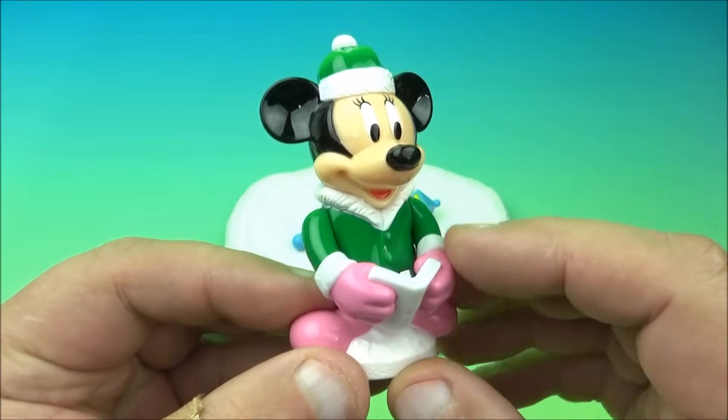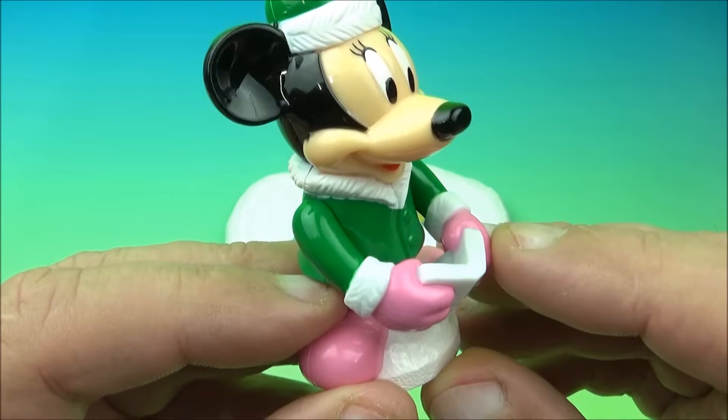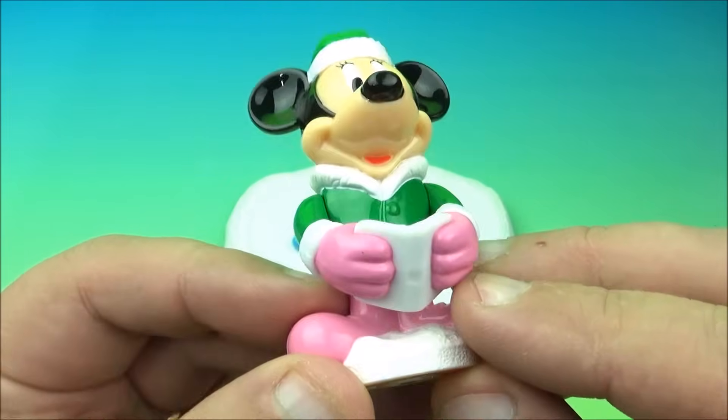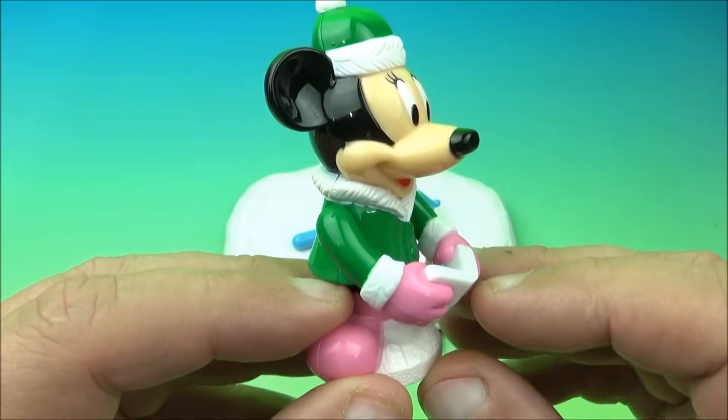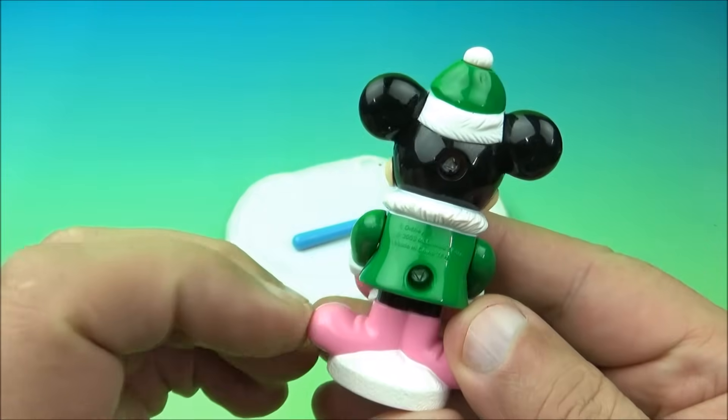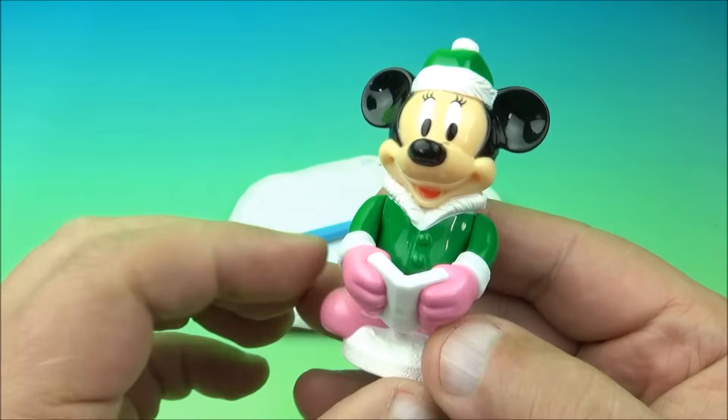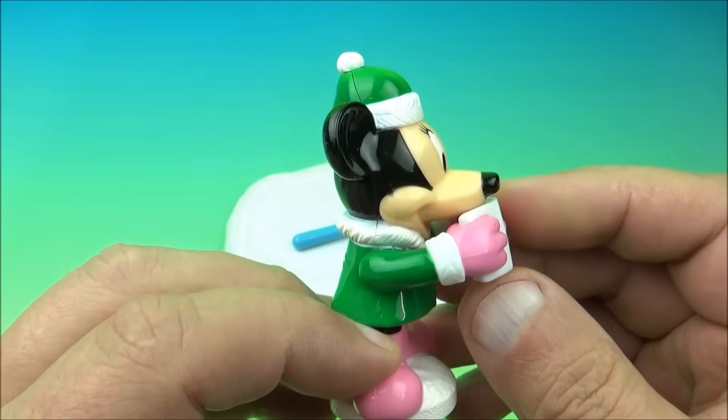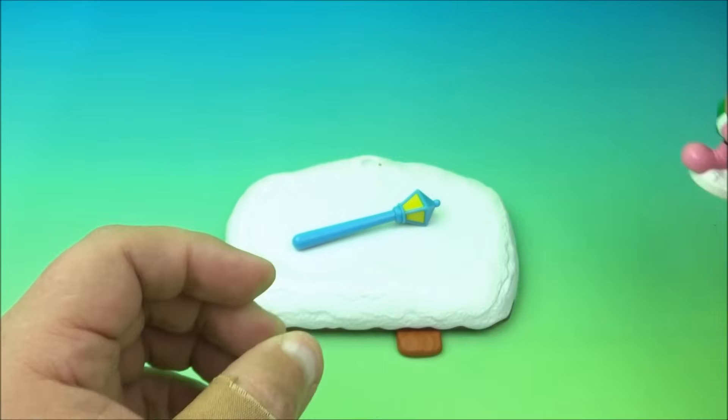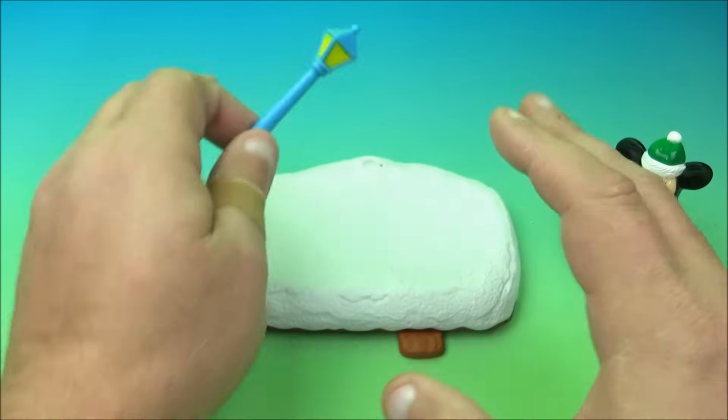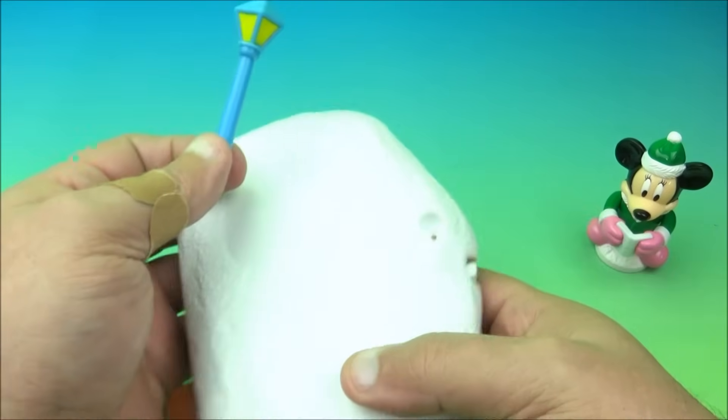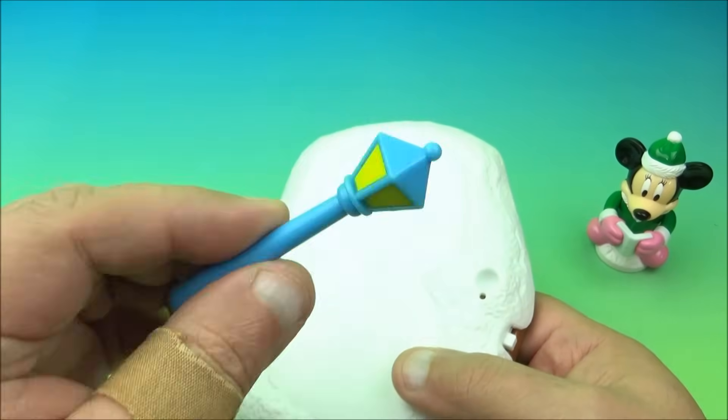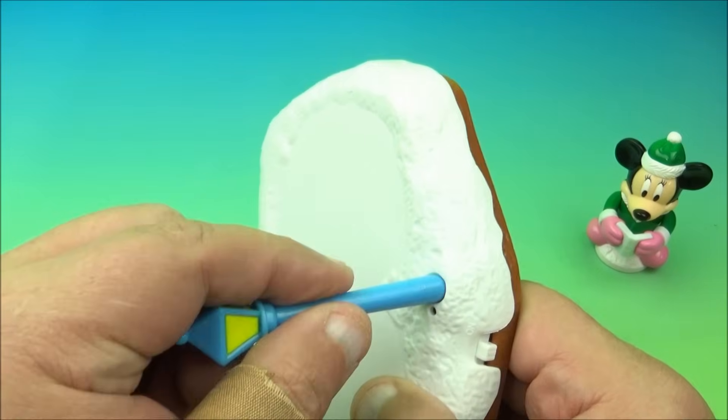Next we have Minnie Mouse looking very lovely. I like the green coat and she is reading a book, it looks like probably a book of songs so she's probably out Christmas caroling. She's got the nice little hat on, pink boots looking nice. And then her arms move up and down so you can see there is some movement there. And then down here you got a couple other pieces. This is what's really cool about this particular toy. So you have this lamp post which plugs in right here.